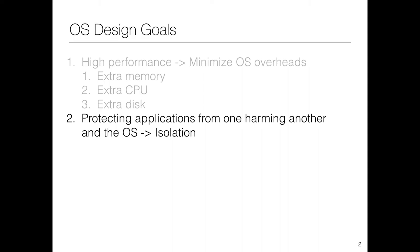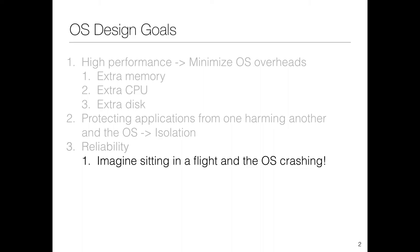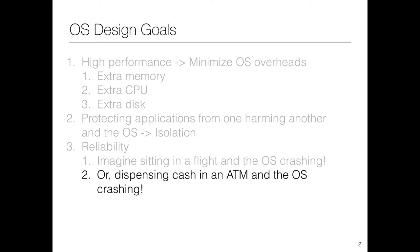The second important goal is to protect applications from harming one another and from harming the OS itself. You don't want any application to end up harming the OS the way viruses do. So you want to build a resilient OS that can isolate applications from each other. You also want the OS to be reliable because the OS is the program which is always running. Imagine the autopilot running on Linux and it suddenly crashes — that could spell disaster.